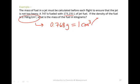So, from that one equality, just like all the others, we can write two conversion factors: 0.768 grams over 1 centimeter cubed or 1 centimeter cubed over 0.768 grams. So, let's try to answer this question.